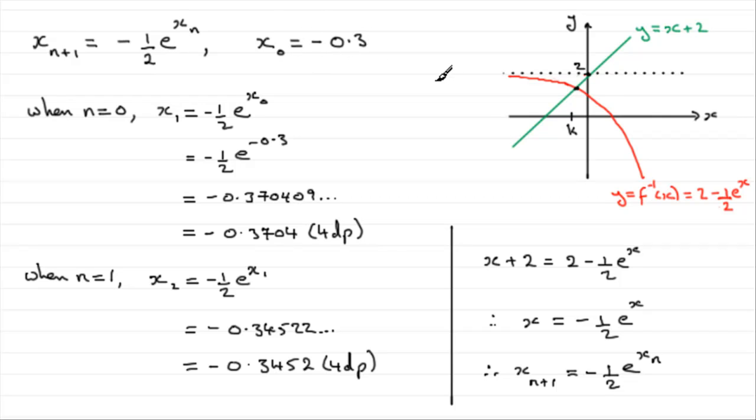They got this starting value x zero as being minus 0.3 by taking a value close to this value k, a negative value.